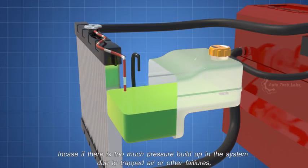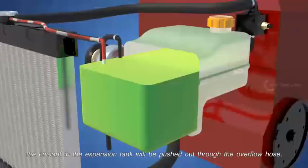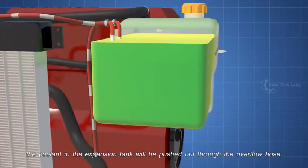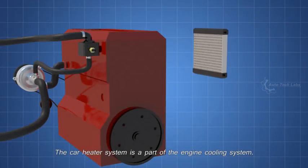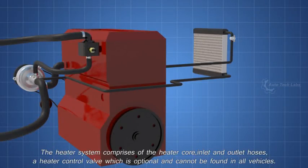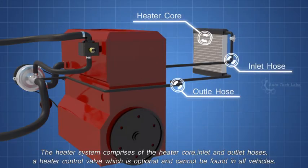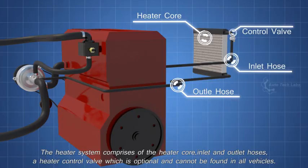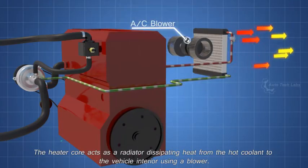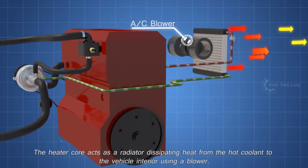In case if there is too much pressure build up in the system due to trapped air or other failures, the coolant in the expansion tank will be pushed out through the overflow hose. The car heater system is a part of the engine cooling system. The heater system comprises of the heater core, inlet and outlet hoses, a heater control valve which is optional and cannot be found in all vehicles. The heater core acts as a radiator, dissipating heat from the hot coolant to the vehicle interior using a blower.